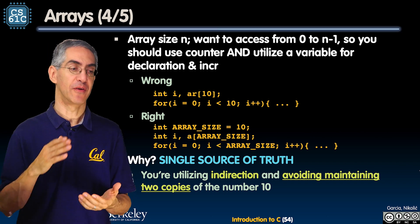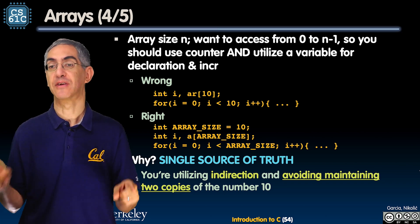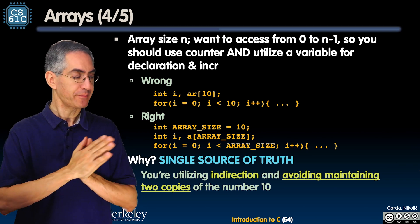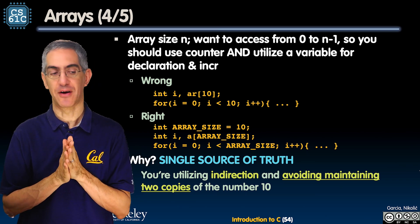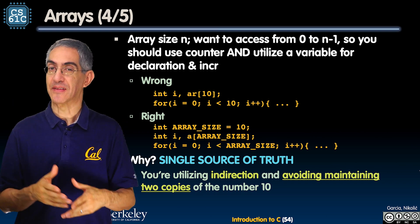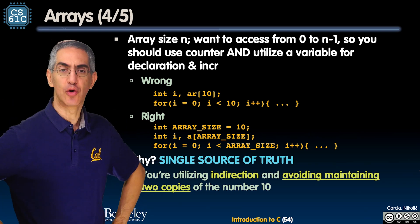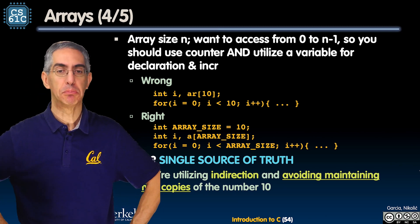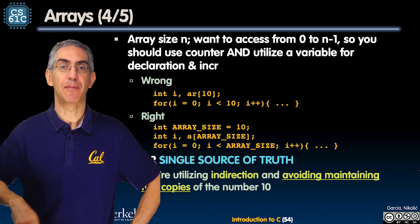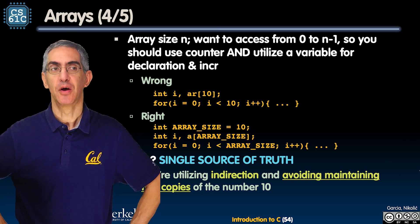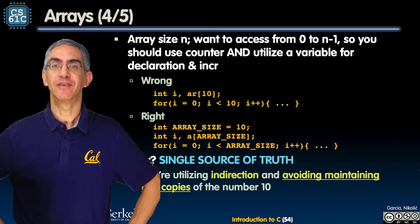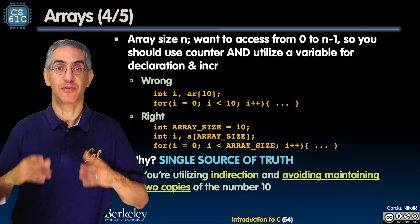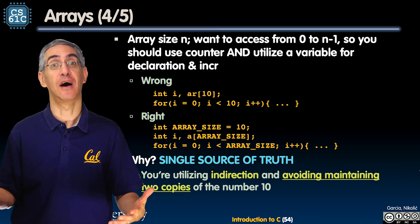Arrays are indexed so if the array size is n you want to access 0 to n minus 1. The problem is this particular slide is talking about a style thing. So this top line of code looks right but it doesn't look right. Look at it: int i, AR[10]; for i=0; i<10; i++. Looks good right? Well the problem is you've written 10 twice and what we want to teach you in 61C is not just how C works but actually good style.